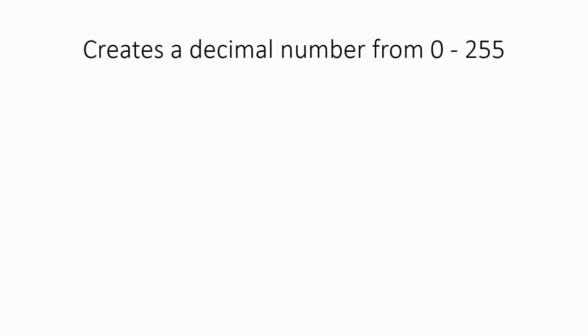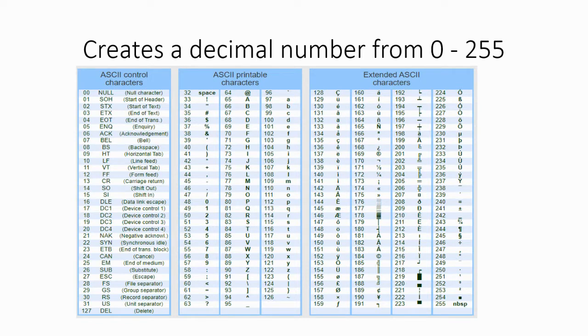We'll create a decimal value anywhere from 0 to 255. Each one of those values represents a character that we can understand.